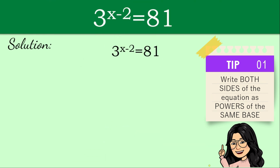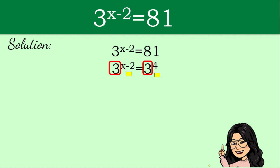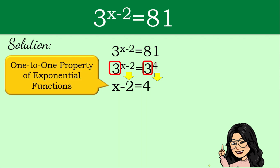Let's rewrite the given. This time we are going to express 81 with a base of 3. So that will be 3 raised to the power of x minus 2 is equal to 3 raised to the power of 4. They now have the same base, which is 3. From there, we are going to use the one-to-one property of exponential functions. Since base 3 raised to x minus 2 equals base 3 raised to 4, using the one-to-one property, we can say that x minus 2 is equal to 4.